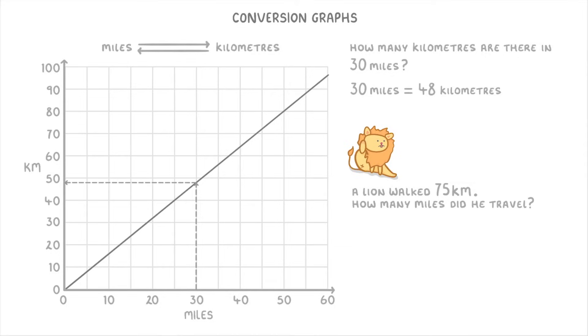So first of all, we need to find 75 kilometers on our y-axis. Then we draw a dashed line across to our main line, and then we draw a vertical dashed line down to our x-axis, which hits it at about 47. So we know that 75 kilometers is equivalent to 47 miles, which means that the lion walked 47 miles.